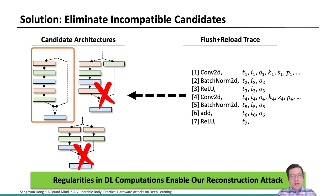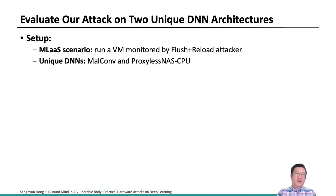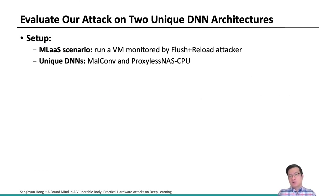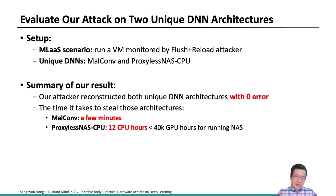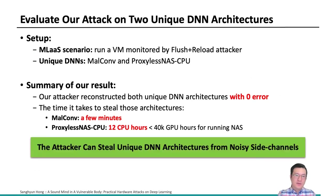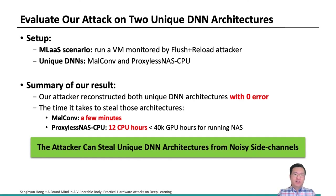Now the evaluation. We evaluated our reconstruction attack with two unique neural network architectures — MobileNet and ProxylessNAS CPU — and consider machine learning as a service scenarios in the cloud. In summary, we reconstructed both unique architectures with zero error, and the time it takes to reconstruct is much less than the time to construct those architectures. So from this noisy information — which is considered weak — extracted from the cache side-channel attack, our attacker can steal unique architectures with zero error.